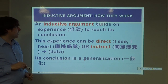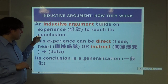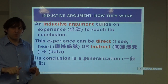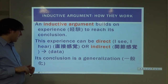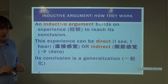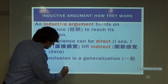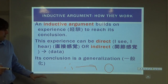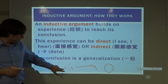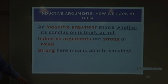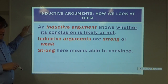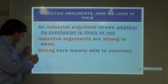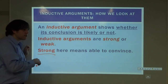An inductive argument builds on experience to reach its conclusion. This experience can be direct or indirect — things that I have seen or collected in some other way. The conclusion is a generalization: we take specific instances and make a statement about the whole. It snowed once, twice, three times — therefore it snows a lot. An inductive argument shows whether its conclusion is likely or not. Strong here means that it is able to convince.